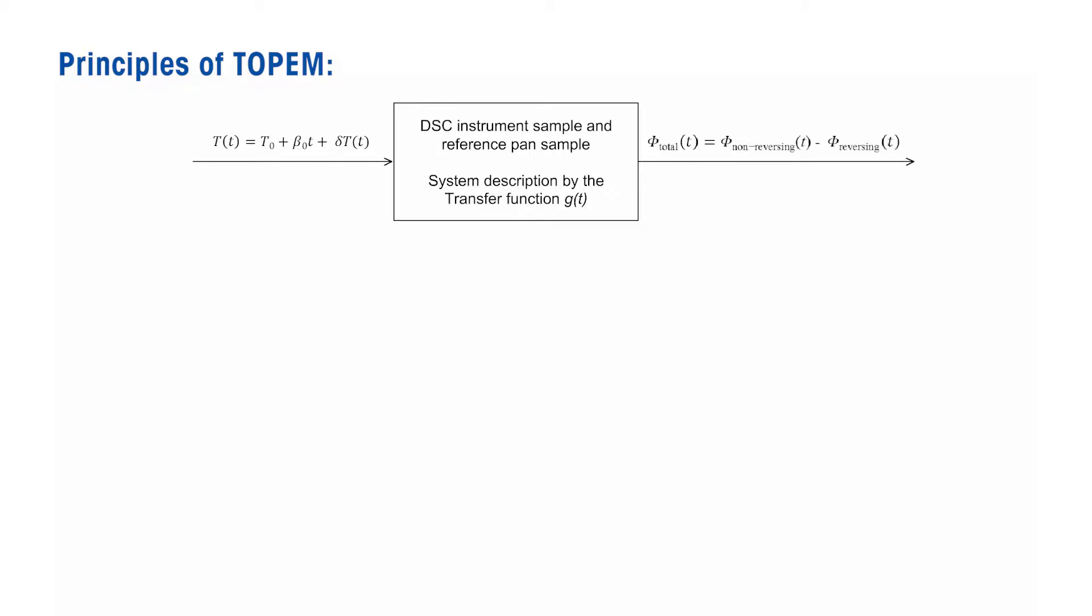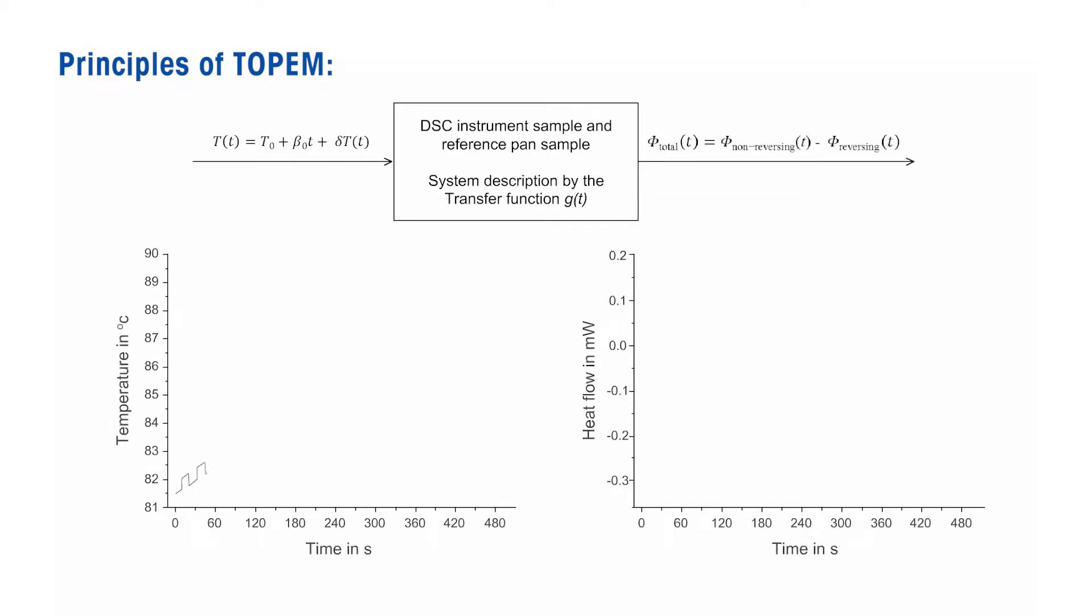The stochastic temperature modulation used in Topham allows us to obtain as much information as possible about the system. The modulation consists of short random pulses of defined pulse height superimposed on a relatively slow underlying heating program. This produces a heat flow output signal that appears to be very noisy.